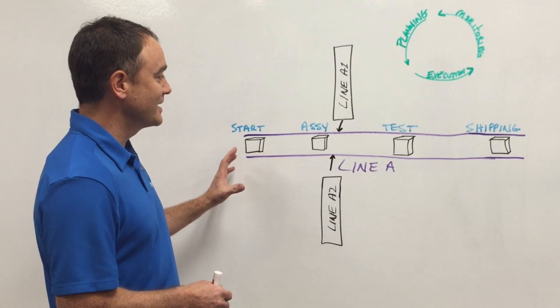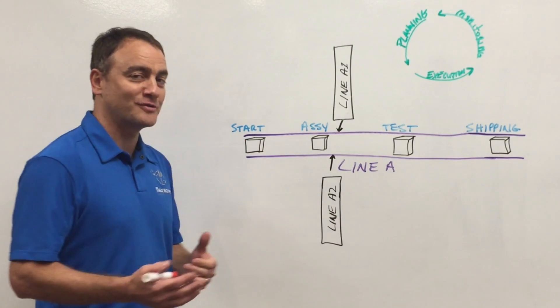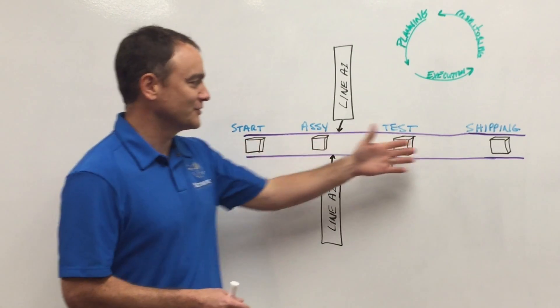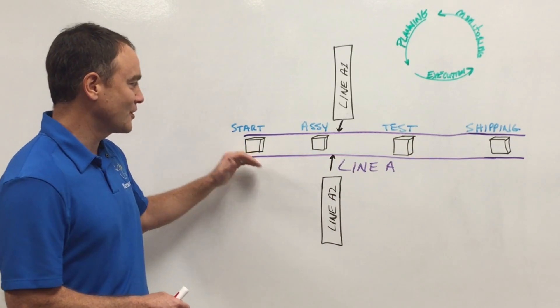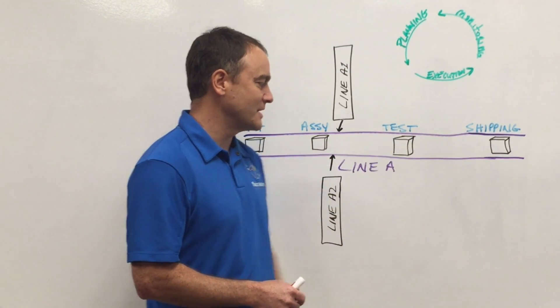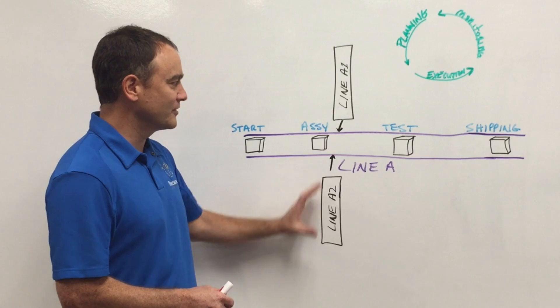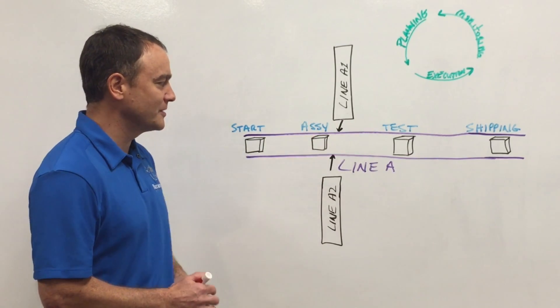So here's my manufacturing line. In this case, we're going to manufacture furnaces today. So here's my little furnaces going down the line. I've got a start of assembly, an assembly area, a test area, and a shipping area. I've got a couple of feeder lines that are feeding some parts into our assembly area.